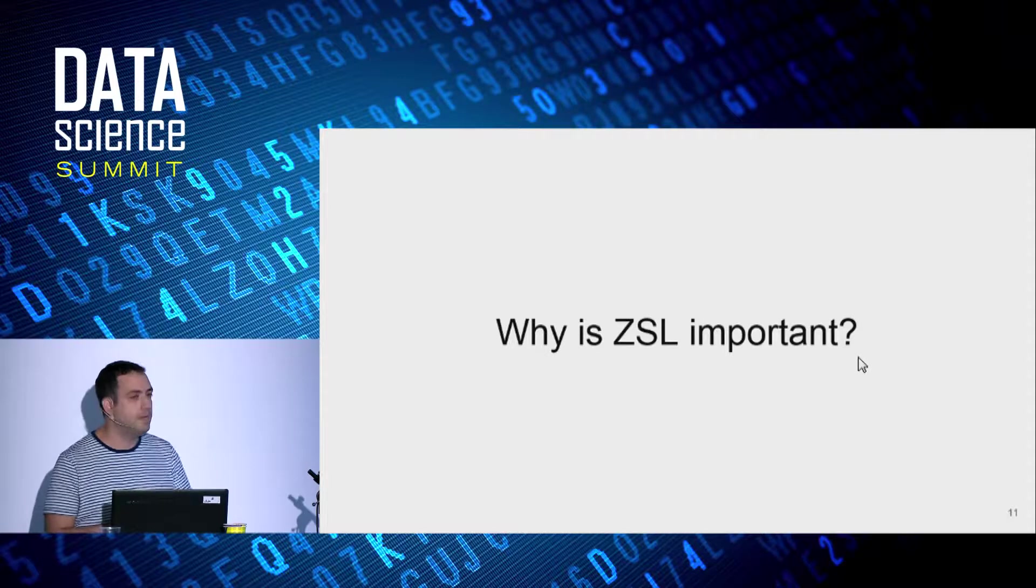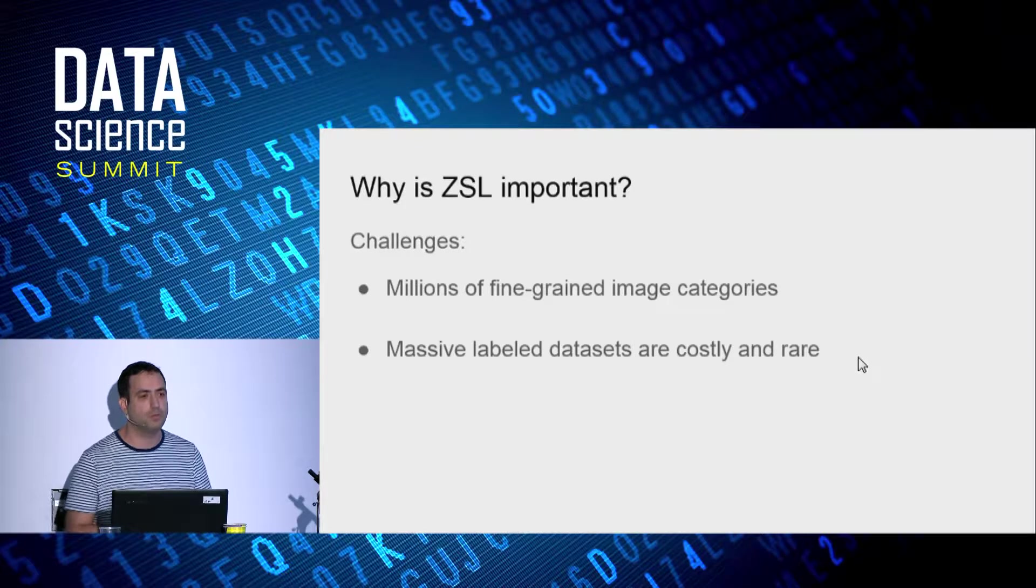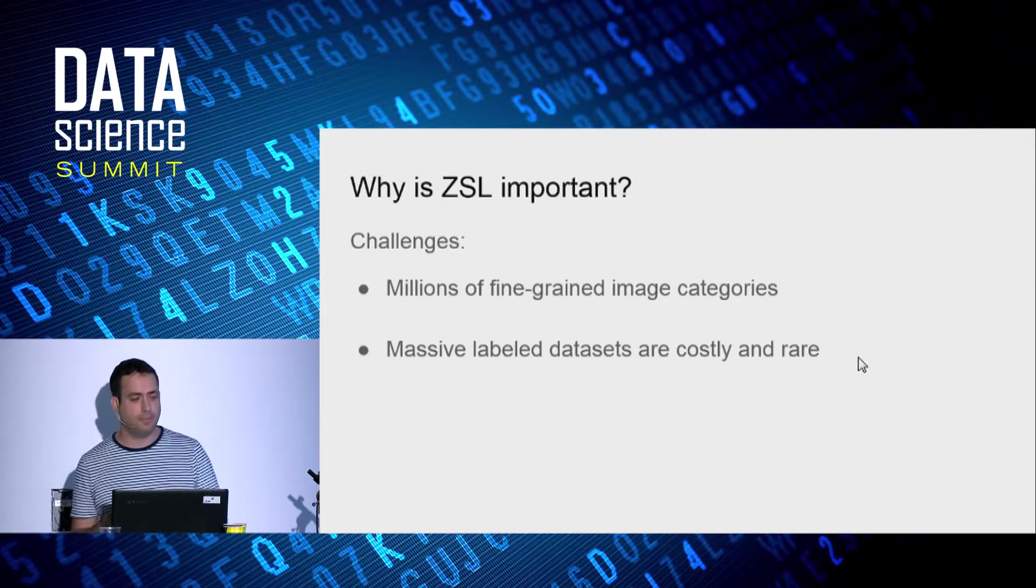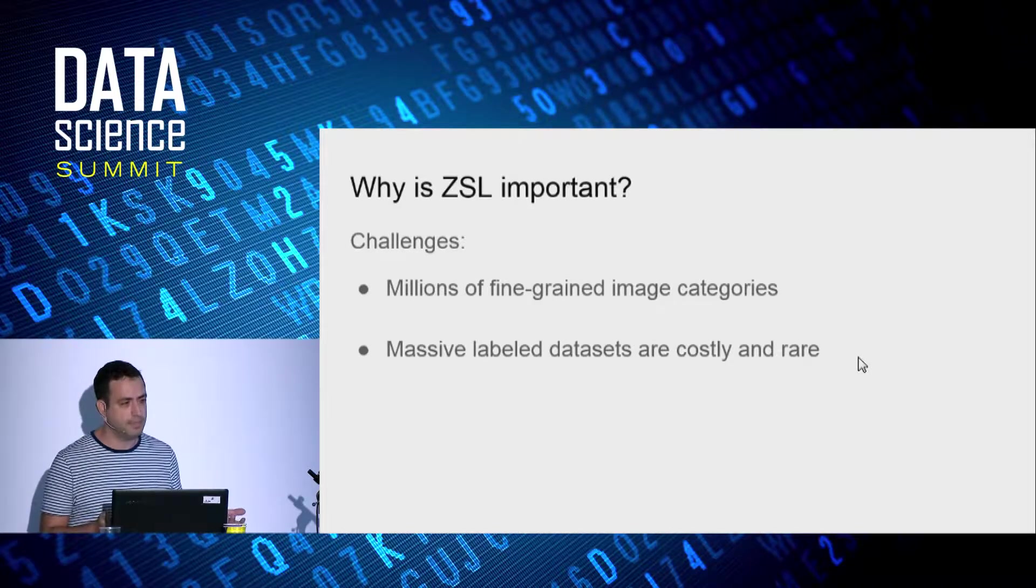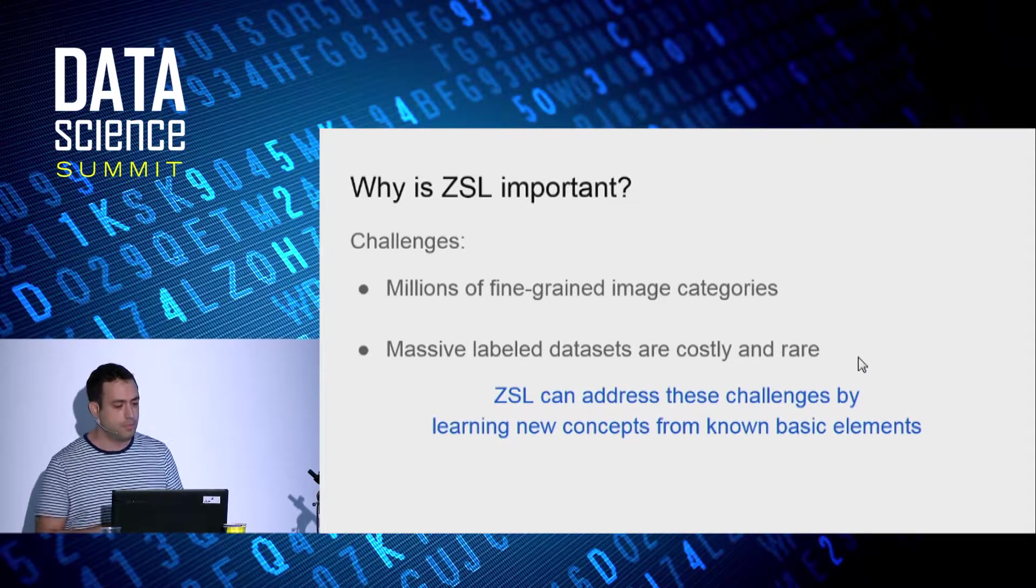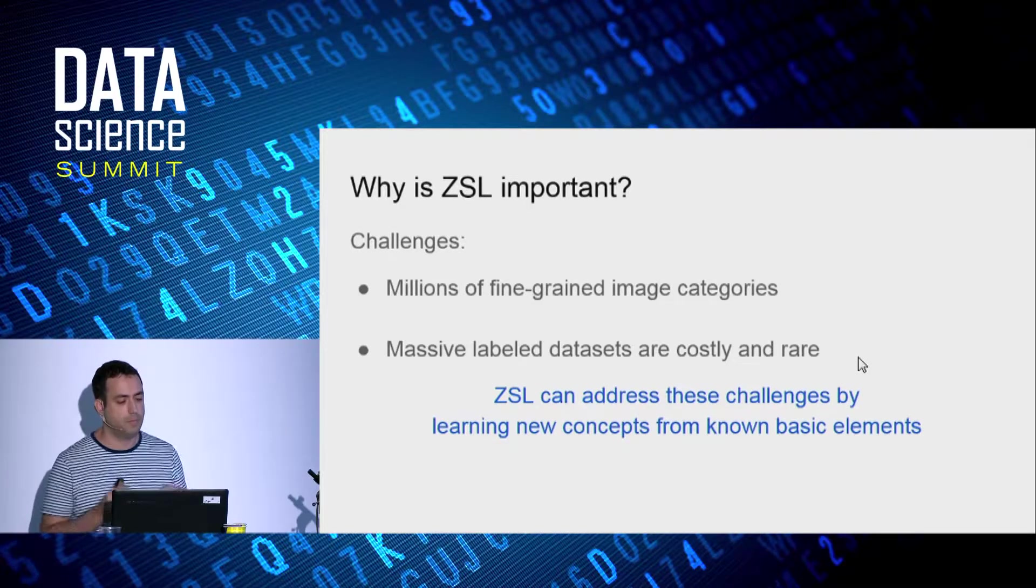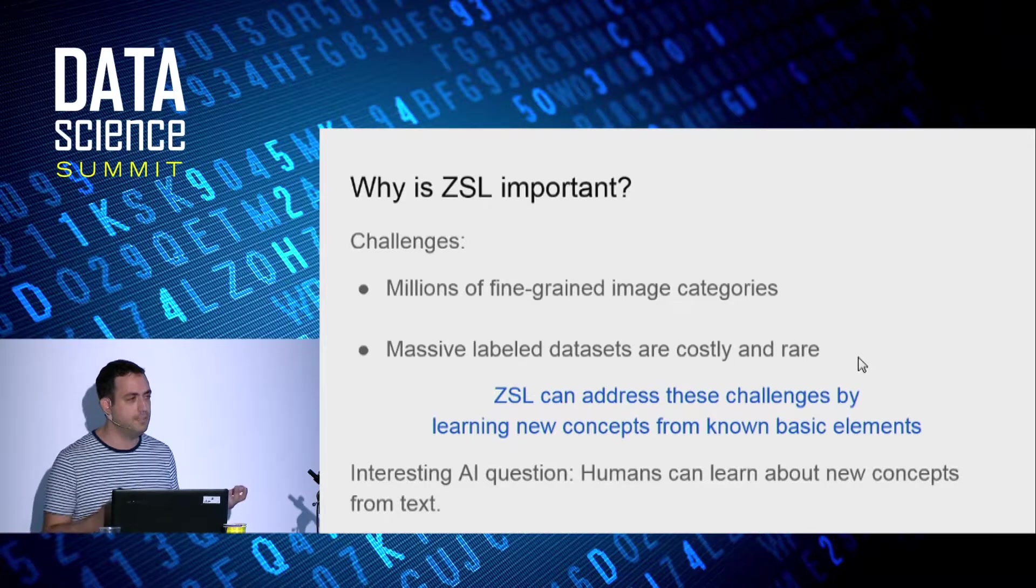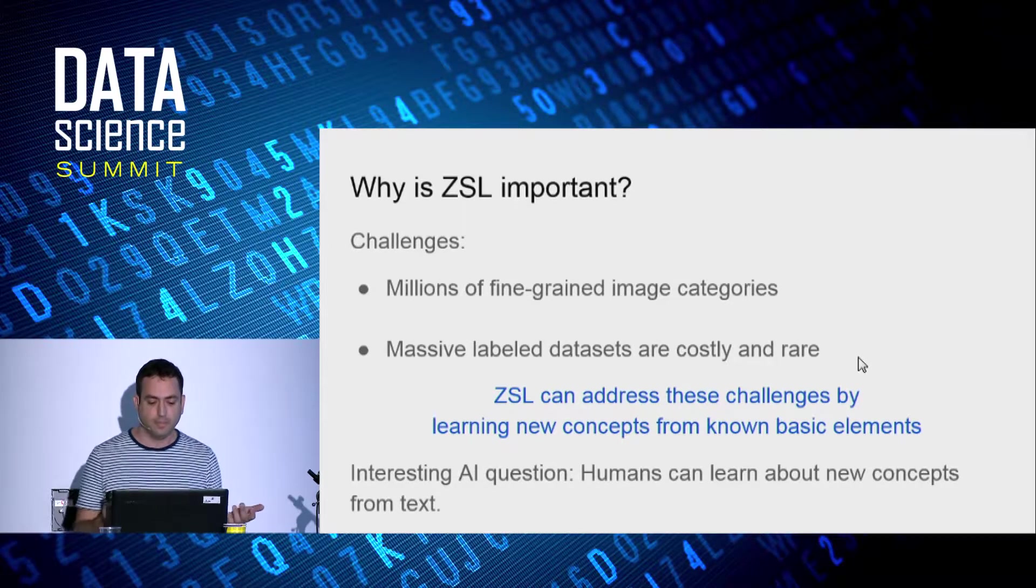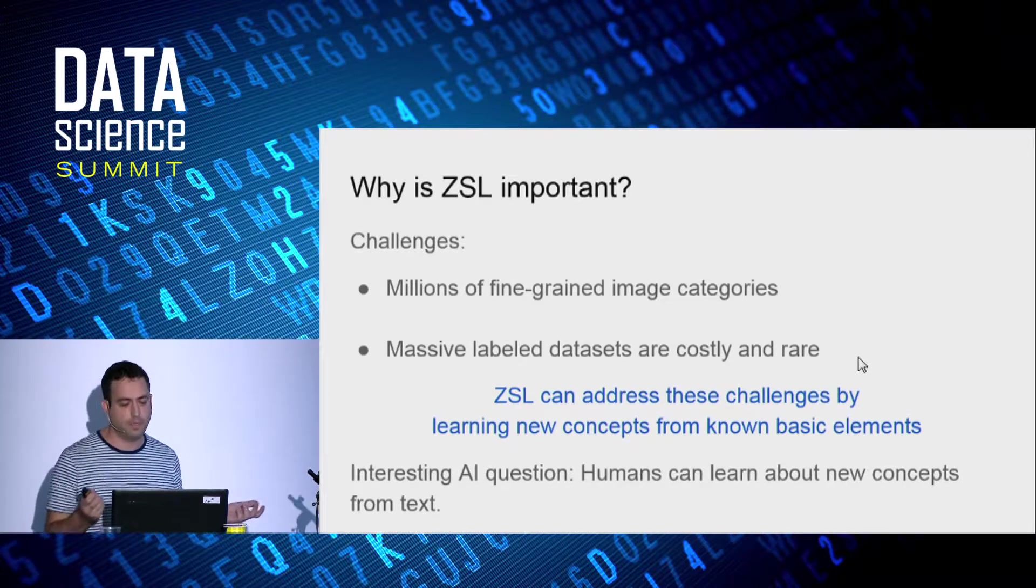So why is zero-shot learning important? When we build an image recognition model, we would like to classify millions of categories, but we simply cannot collect so much labeled data. So zero-shot learning can address these challenges by learning new concepts from known basic elements. Also, this is an interesting AI question, since humans can learn about new concepts from text, like reading a Wikipedia article.